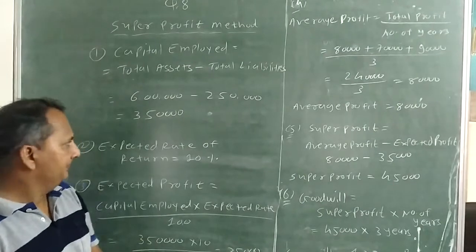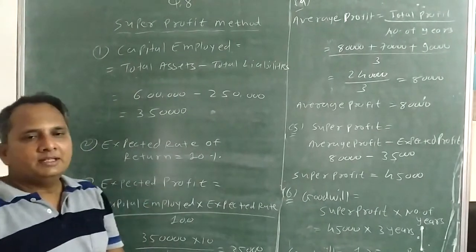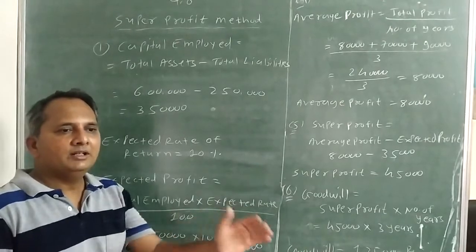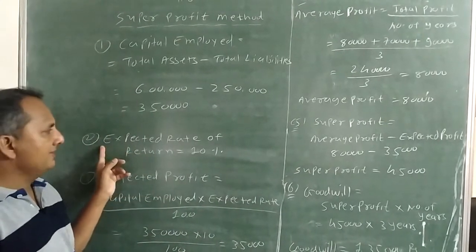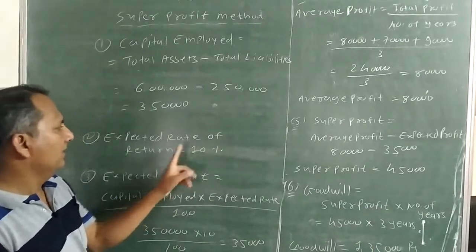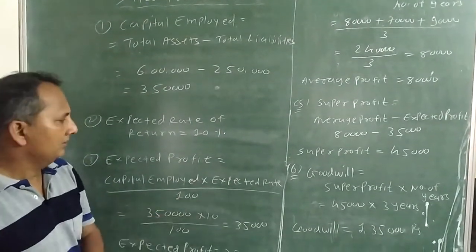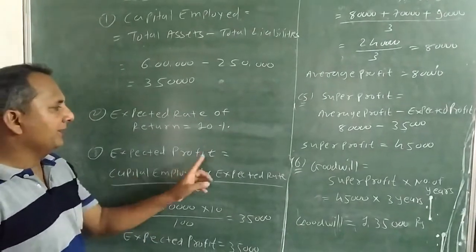Now second step, you can see that in the sum expected rate of return is given 10%. So second step is expected rate of return is equal to 10%. Now we are going to find out expected profit.